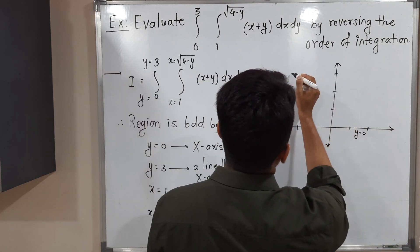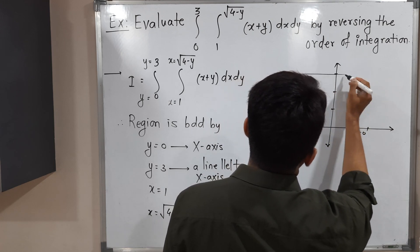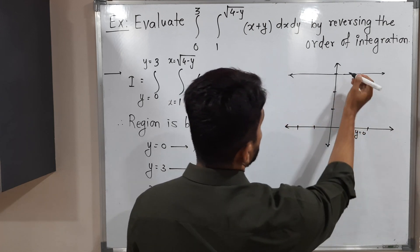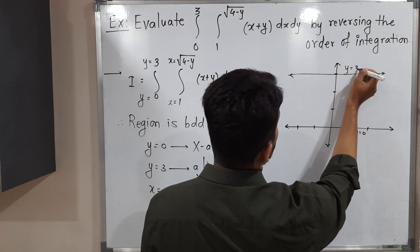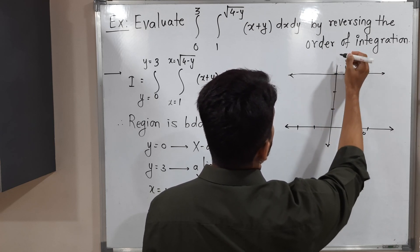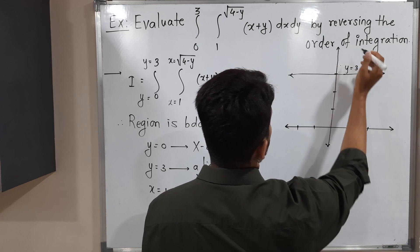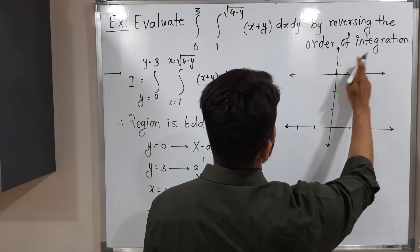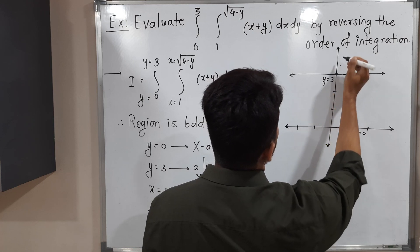So the line y equals 3 will be here — a line parallel to the x-axis passing through y equals 3. Let me extend and draw it. So this is y equals 3.